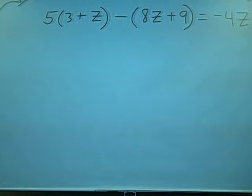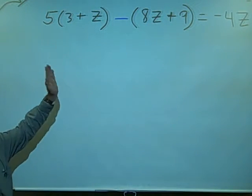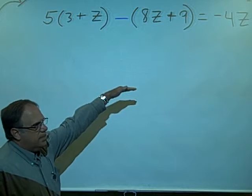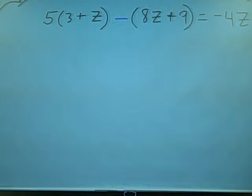What do we do? Yeah, we've got to distribute that 5. Distribute the 5, and what about this negative? Distribute the negative, right. We make the minus sign a plus and change the signs of everything inside. It's like distributing a negative 1, or you could just make the minus sign plus and then distribute that negative inside.